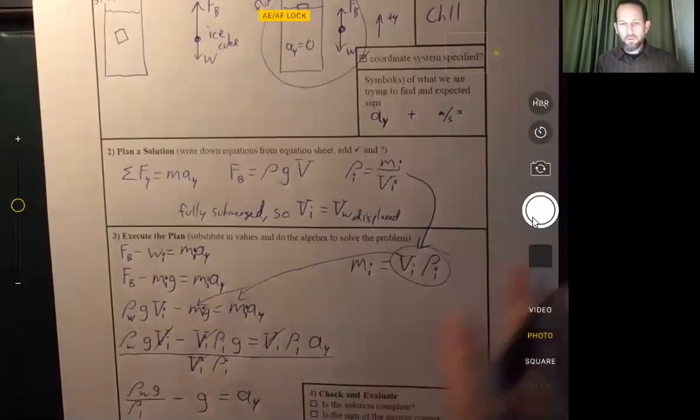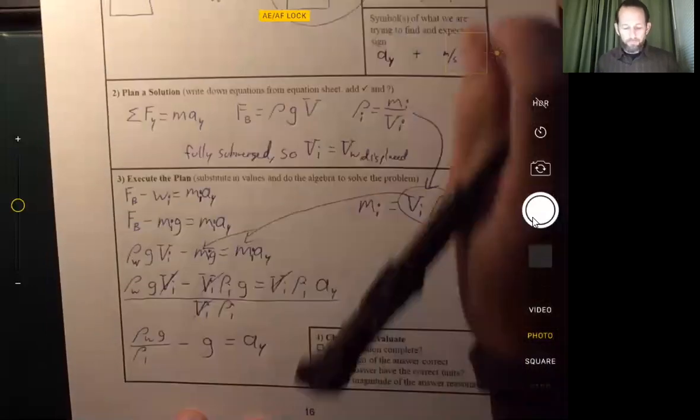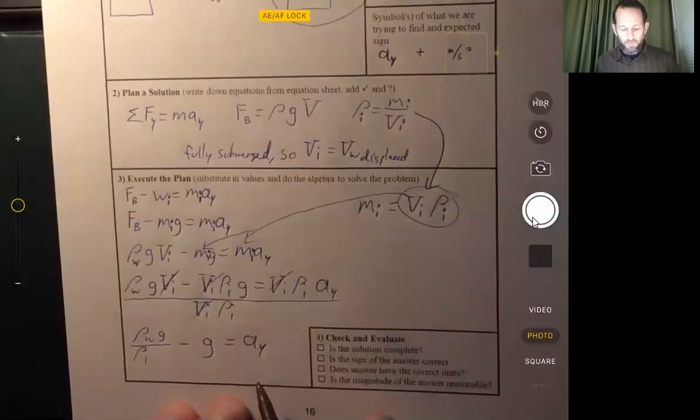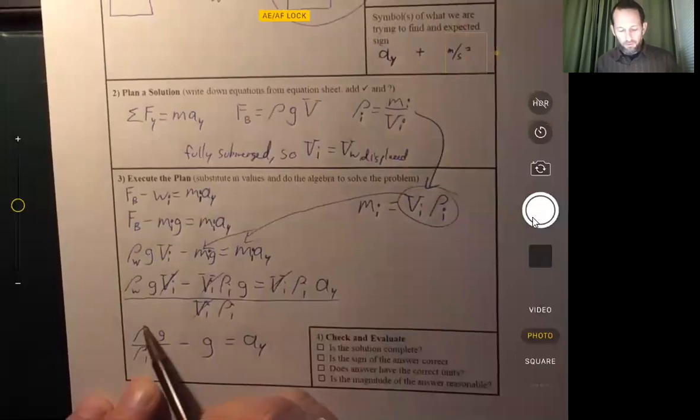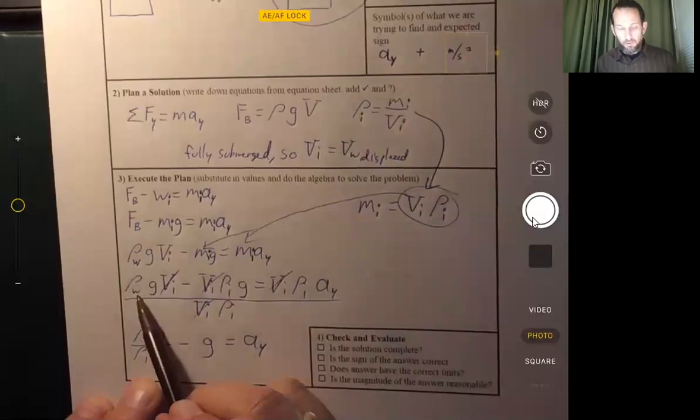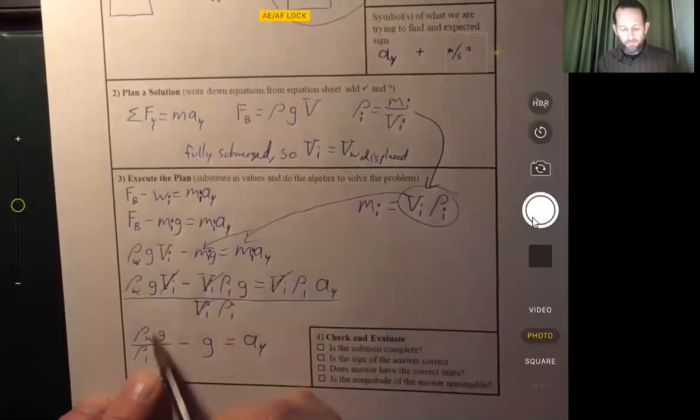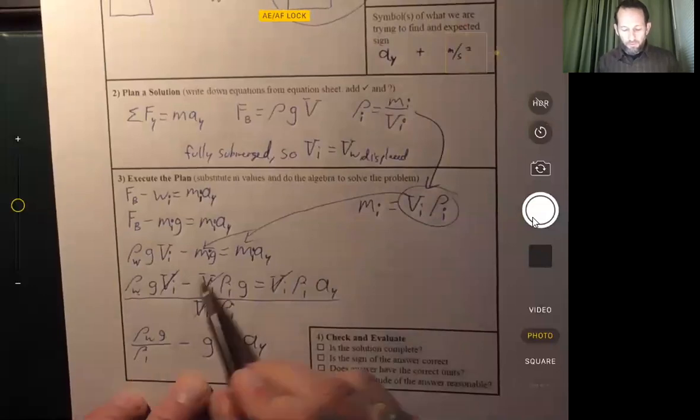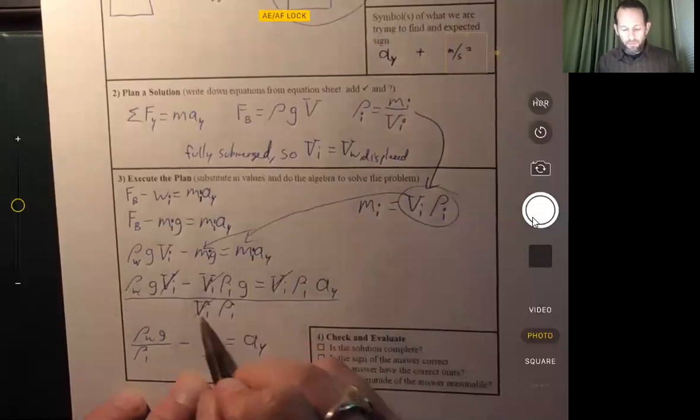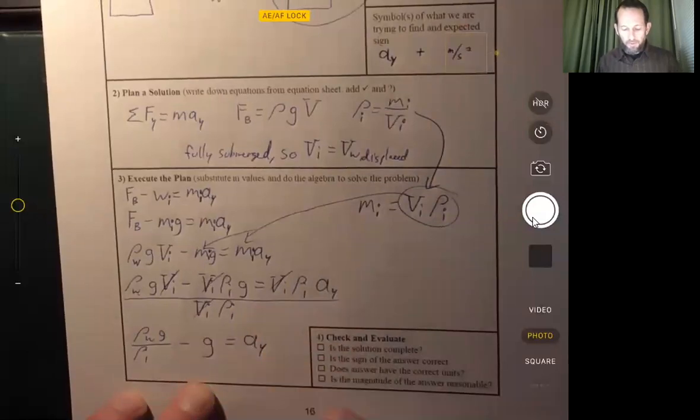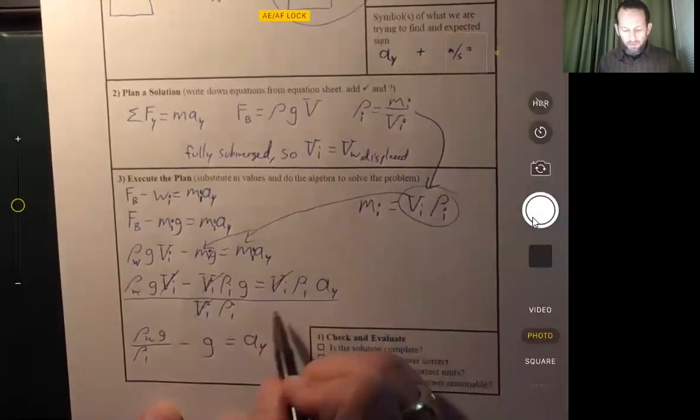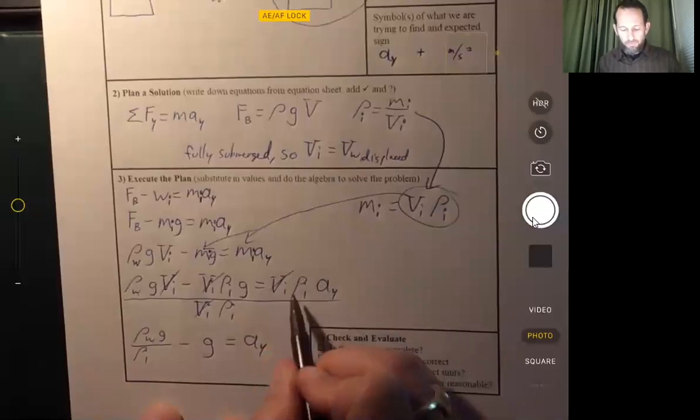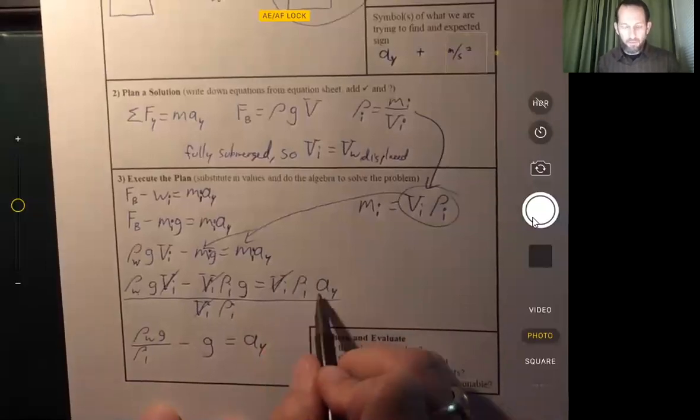Density of ice cube and density of ice cube cancels out there. Let me pull this up. So again, this comes from here. Density of water, density of water, G. And then we're dividing by V sub I. So that part cancels out. And then we have the density of the ice cube there. And then for this term, both the volume and the density of the ice cube cancel out. So we just get G. And then on this side, the whole reason we divided by V sub I, rho sub I, is because they were here. We wanted to get the acceleration by itself.